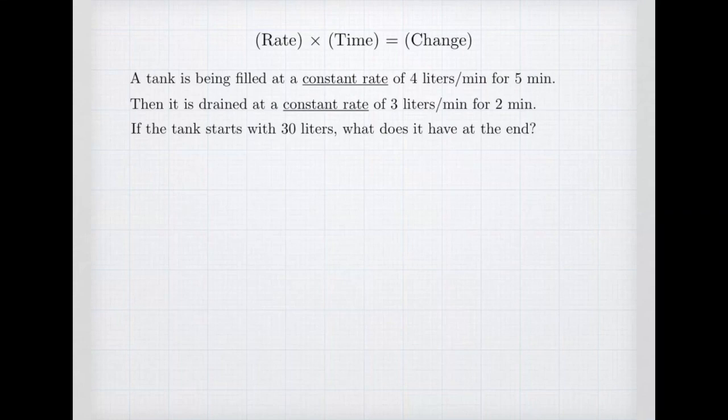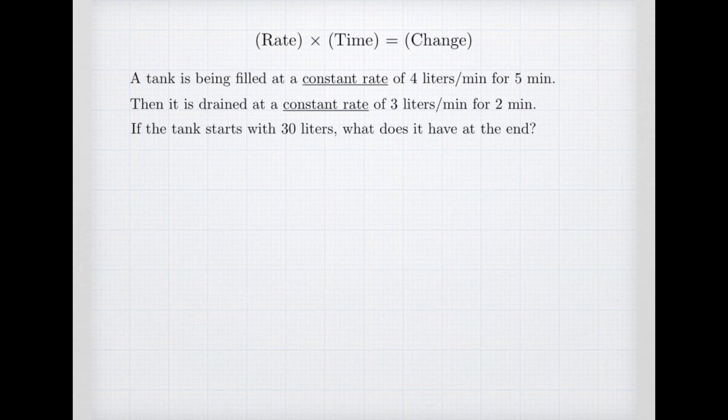Let's start with an example that doesn't require any calculus at all. You've probably heard an equation something like distance equals rate times time. Here we're going to generalize that and think about a rate times a time as giving an amount of change. Suppose a tank is being filled at a constant rate of 4 liters per minute for 5 minutes. Then we drain the tank at a constant rate of 3 liters per minute for 2 minutes. If the tank starts with 30 liters, what does it have at the end?